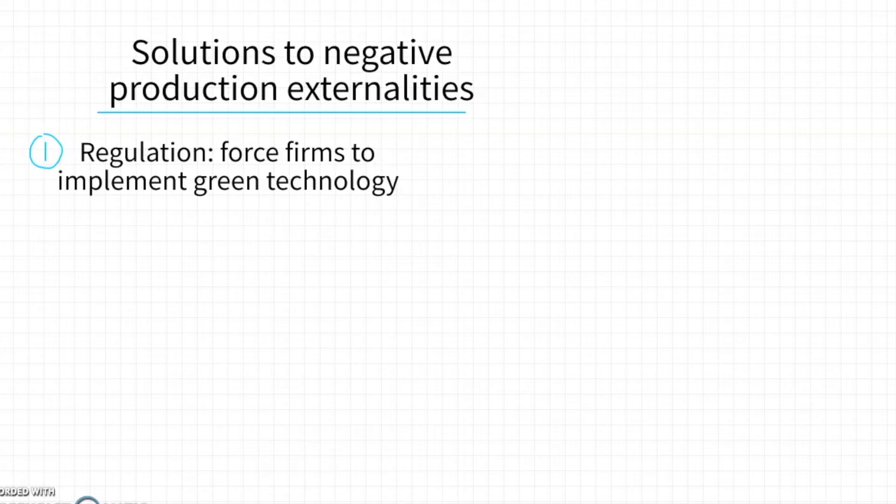So how do we fix this? The first way is through regulation, actually forcing the firm to implement green technology or to change the methods of their production. This will increase production costs for the firm and actually shift the supply curve MPC closer or at MSC. Again, the same evaluation points as before apply. Regulation is expensive. Monitoring is expensive, and that can lead to an opportunity cost in terms of government spending.